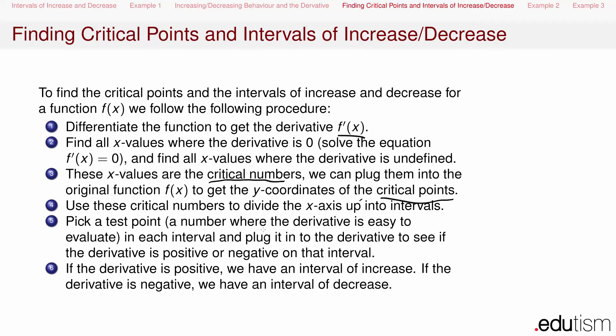Once you've got the critical numbers, we can use them to divide the x-axis up into intervals. We pick a test point in each interval — basically some number in the middle of the interval where the derivative is easy to evaluate. We plug it into the derivative and see if the derivative is positive or negative on that interval. If the derivative is positive, the interval is an interval of increase; if negative, it's an interval of decrease.